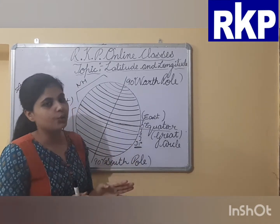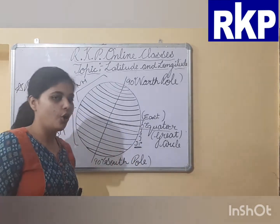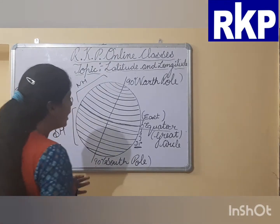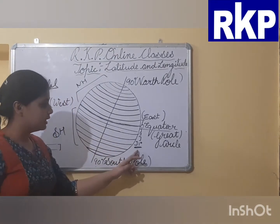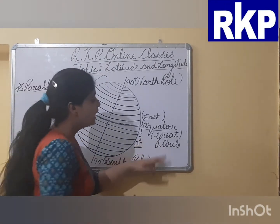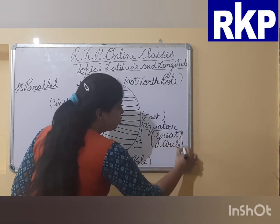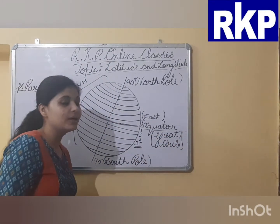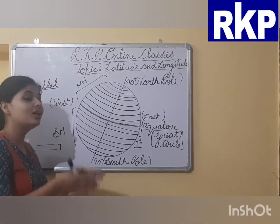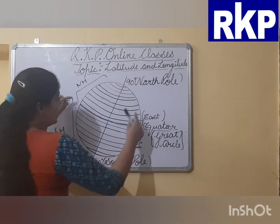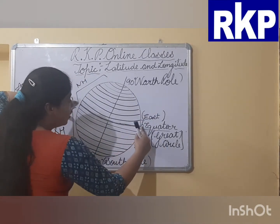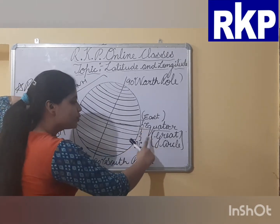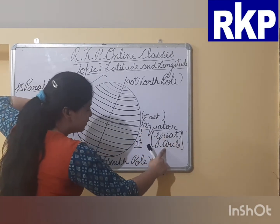So where are latitude lines drawn? They are drawn on the globe because they help us locate places. Now, the equator is also known as the great circle. Why? Because it is the longest latitude line. Here on the globe you can see the longest latitude line is the equator — that's why the equator is known as the great circle.